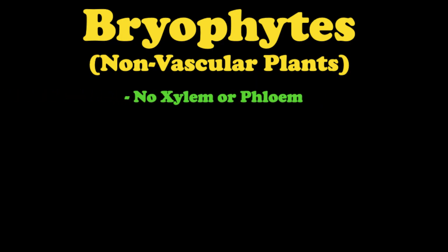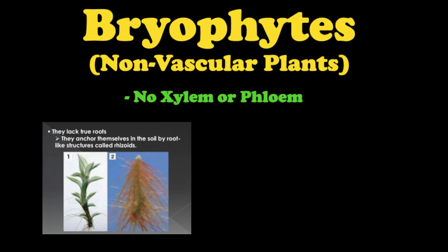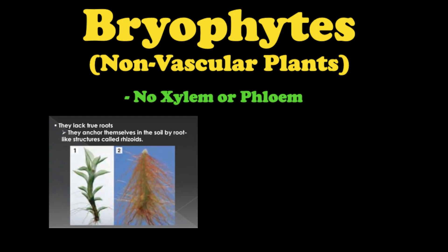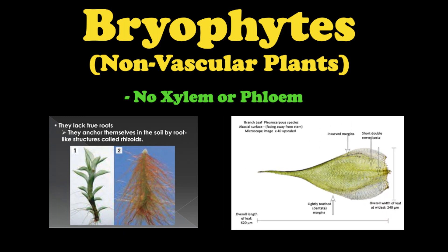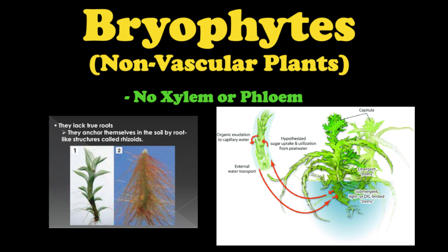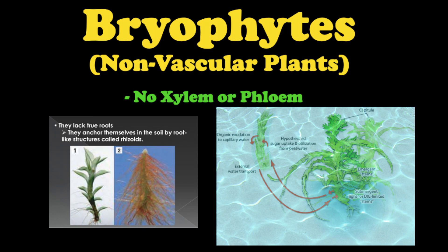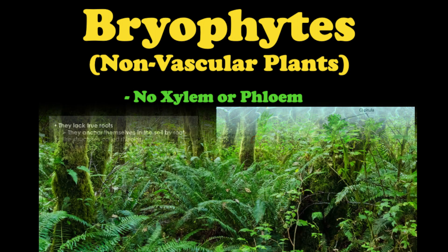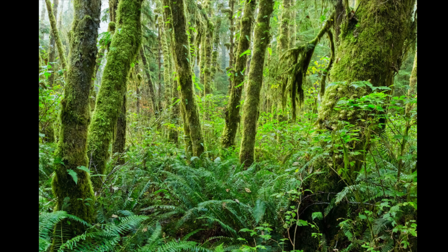Lacking vascular tissue and roots, these plants rely on their leaves for water and nutrient uptake and transportation. Water and nutrients diffuse through the leaves and into the plant. It is for this reason that bryophytes must stay in constant contact with water, growing predominantly in moist environments.